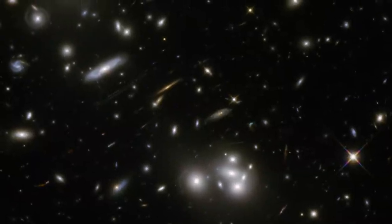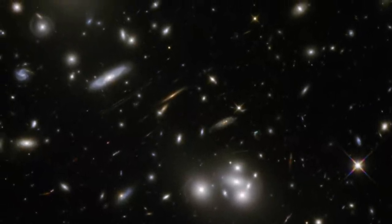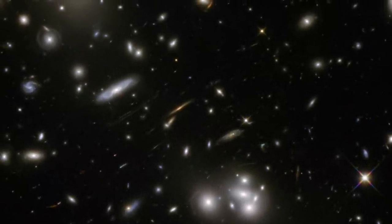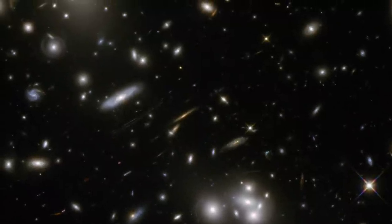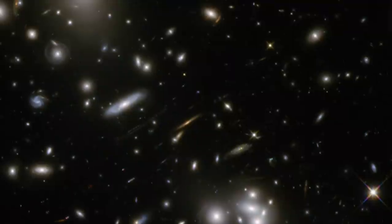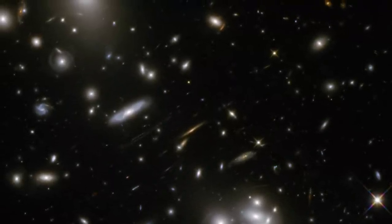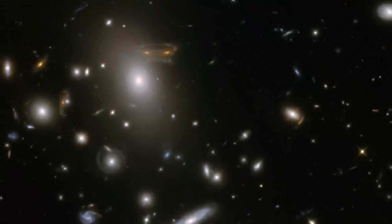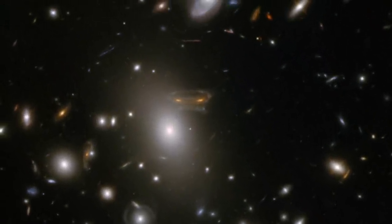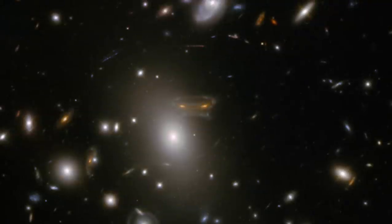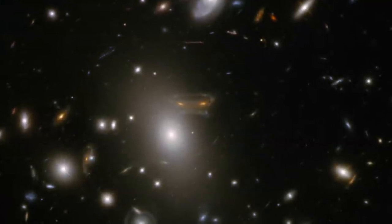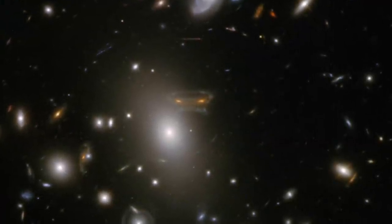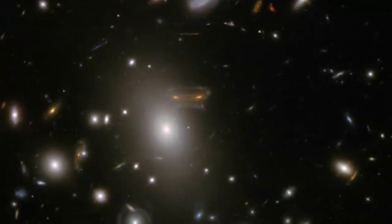Lensing can create weird and amusing shapes. Take Hubble's image of galaxy cluster Abel 68. The central part of this image is distorted and stretched out into streaks by the cluster's lensing effects. But visible in the top corner is a cosmic space invader. This deformed galaxy is actually visible twice as its light is following two separate paths around a nearer elliptical galaxy before reaching us.